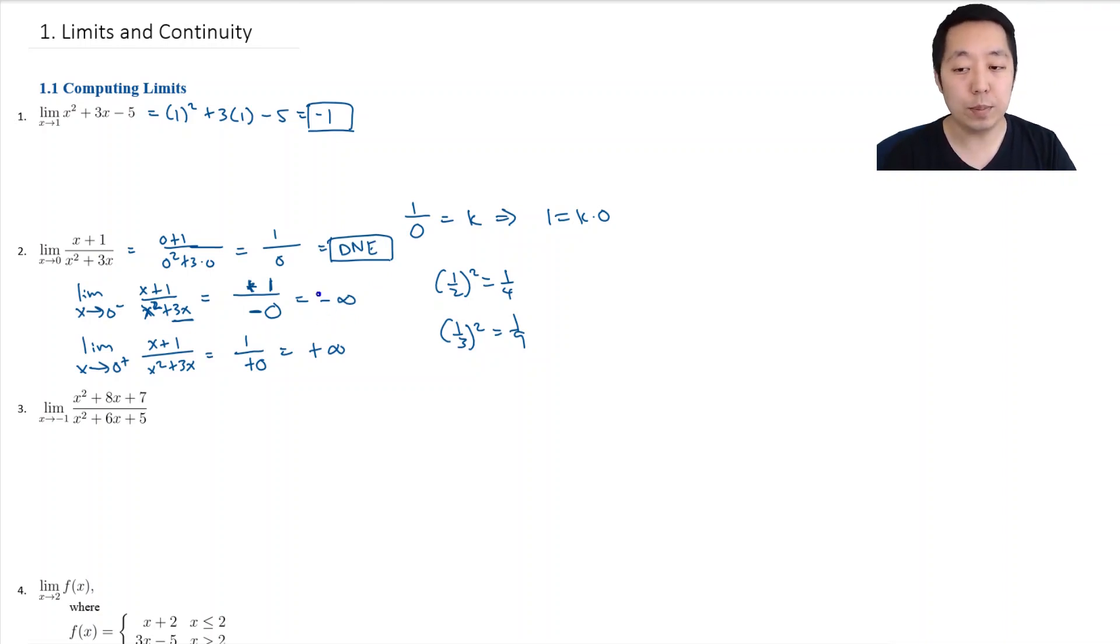Now, keep in mind that even if this were positive infinity, the answer still doesn't exist. Existence of a limit is only for finite numbers. Infinity is not an existence, strictly speaking. But we do write the answer differently if they both happen to be positive infinity or negative infinity when I go from the left and the right.